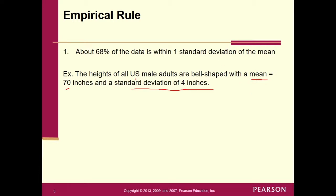Since we're talking about a population — because we said the word 'all' — we're talking about a population mean. The heights of all U.S. male adults are bell-shaped and have a mean, so this must be mu. And since the standard deviation comes from a population, we must be talking about sigma: mu equals 70, sigma equals 4. If it came from a sample, we'd use x-bar and S instead.